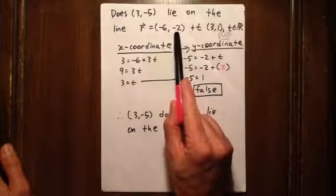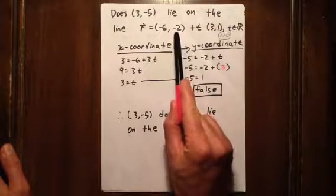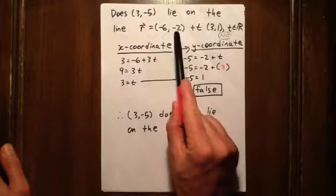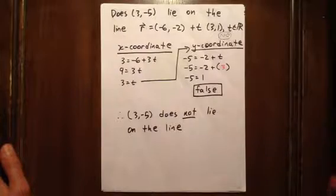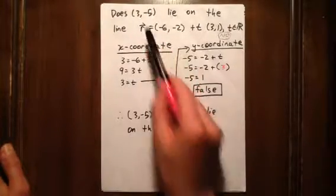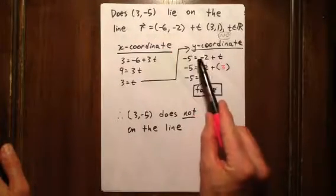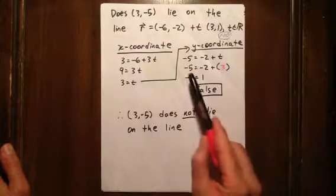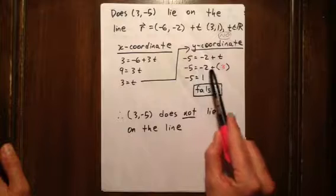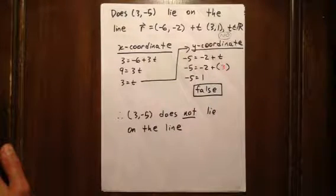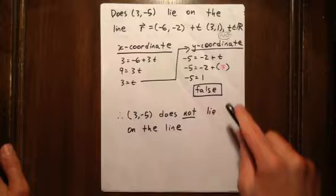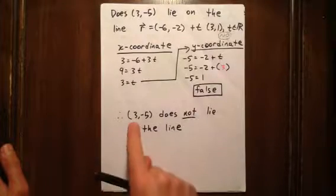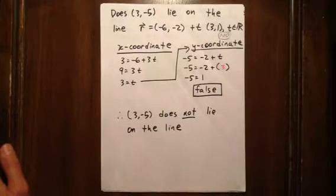Well we know that our y parametric equation will be negative 2 plus t. Letting y be negative 5, we say negative 5 equals negative 2 plus t. We're letting 3 equal t, so we're saying negative 5 equals negative 2 plus 3, negative 5 equals 1. We've obviously run into a problem, that's not true. So the point 3 negative 5 is not on that line.